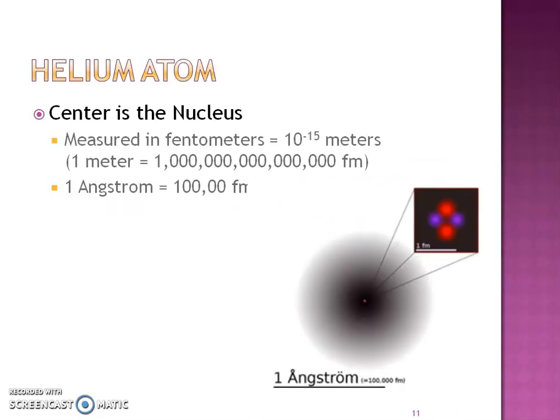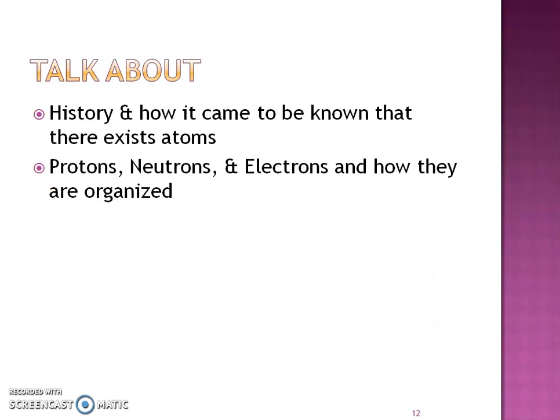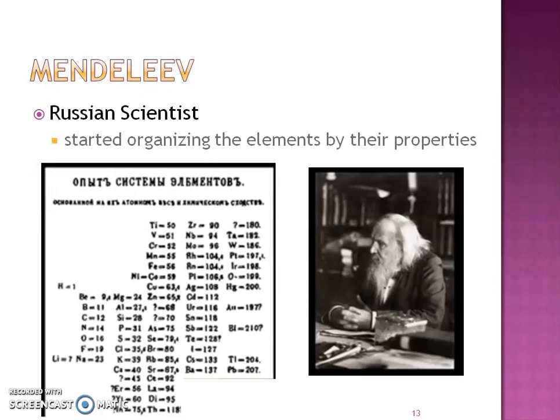I'm going to go through these notes rather quickly. First, he looked at that helium atom and said that the center is the nucleus. He gave you an understanding of how small these atoms and this nucleus are, and talked about the femtometers — that was actually one of those prefix units from Section 3.3. He also talked about how the protons, neutrons, and electrons are organized — a nice preview of this chapter.